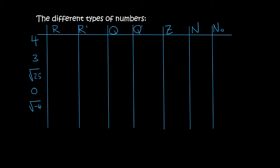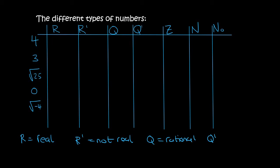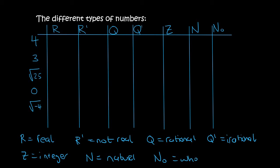Hello everyone. In this lesson I'm going to show you the different kinds of numbers. At the top I've got all these different letters. Let's quickly define them. R stands for real. R with a little line means not real or non-real. Q stands for rational. Q with a line is irrational, which means not rational. Z stands for integer. N stands for natural. N with a little zero stands for whole numbers.